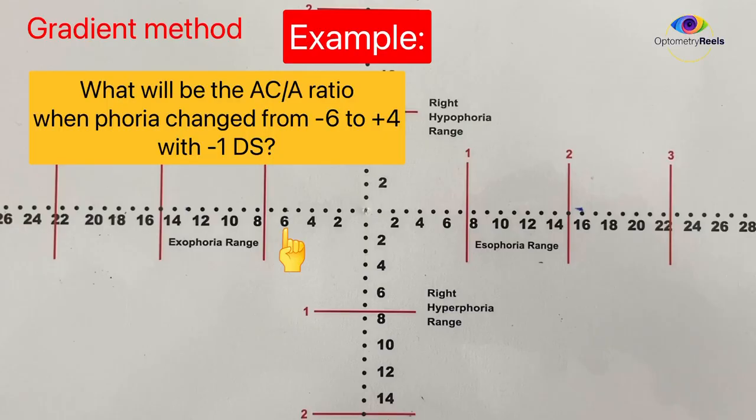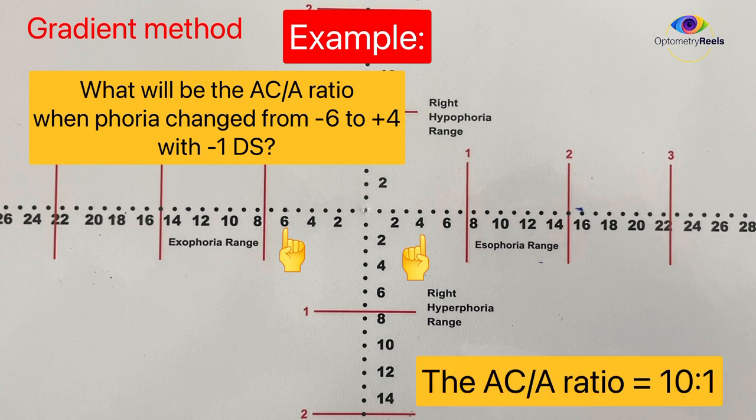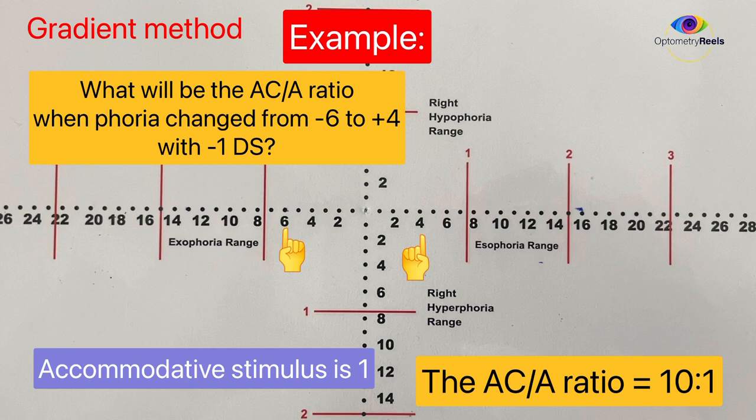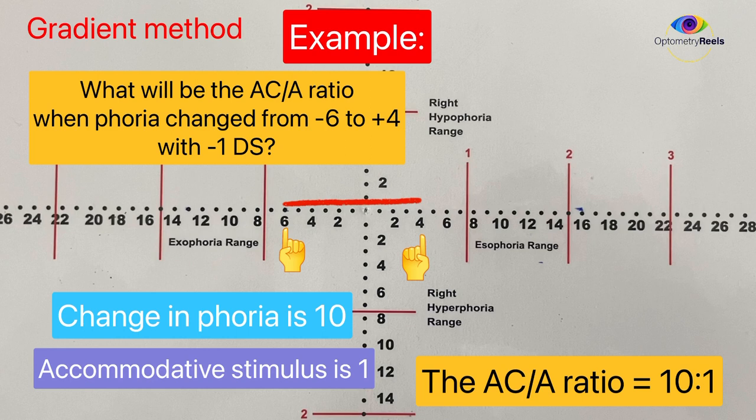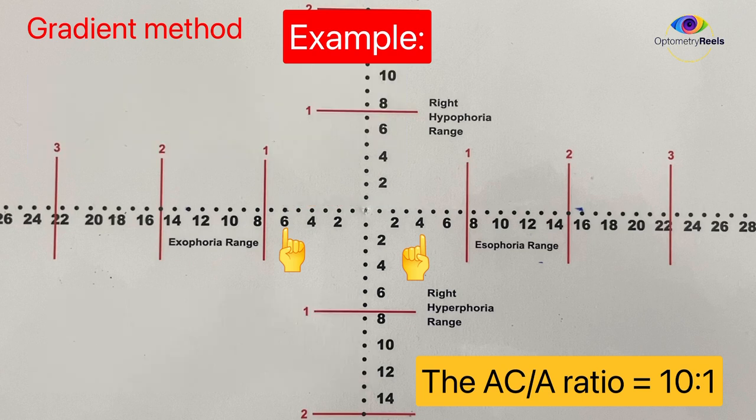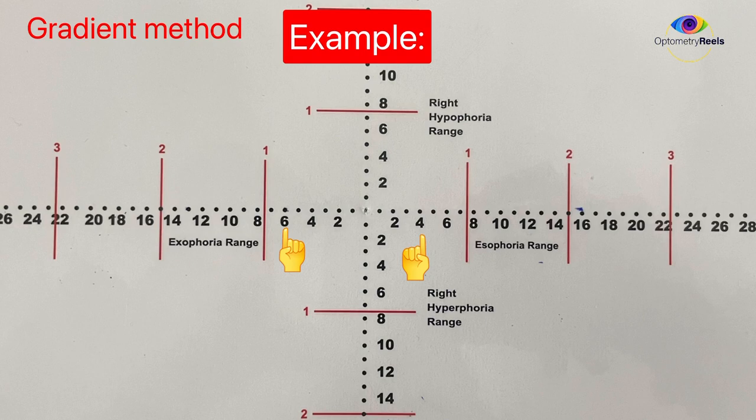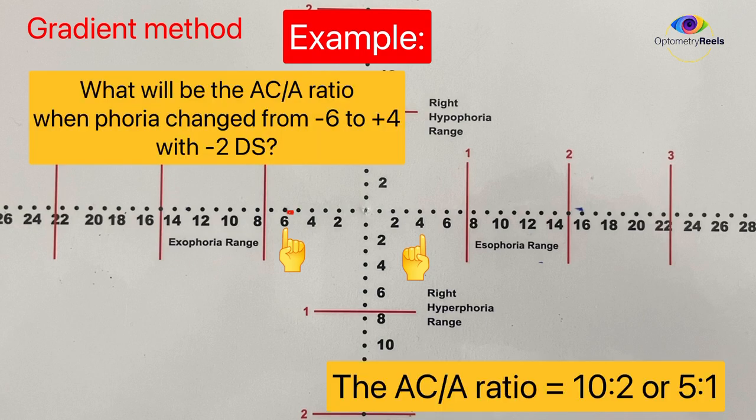Okay, let's understand again with a new example. What will be AC/A ratio when phoria changed from six exo to four exo with minus one diopter? On the modified Thorrington, you can clearly see the change is at 10. Hence AC/A ratio will be 10:1. Again, if you would have used two diopters as a stimulation, it would have been 10:2 or 5:1.